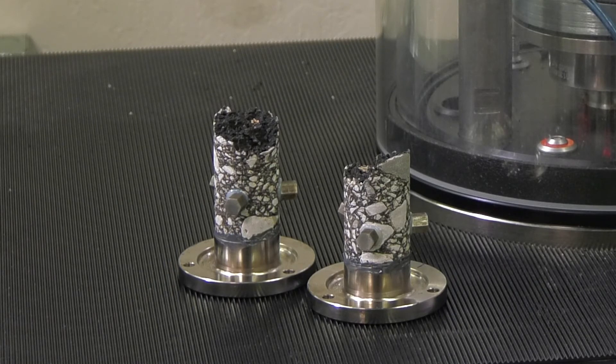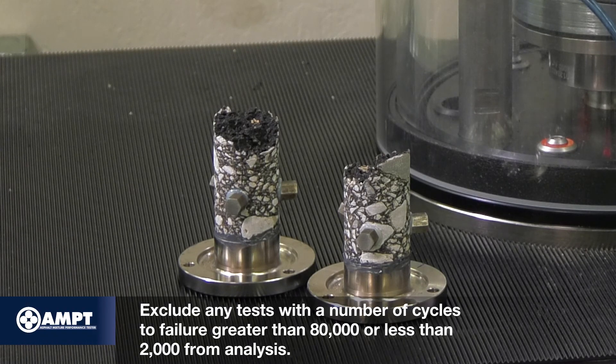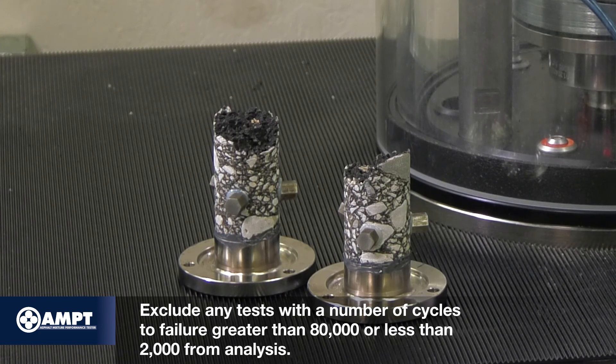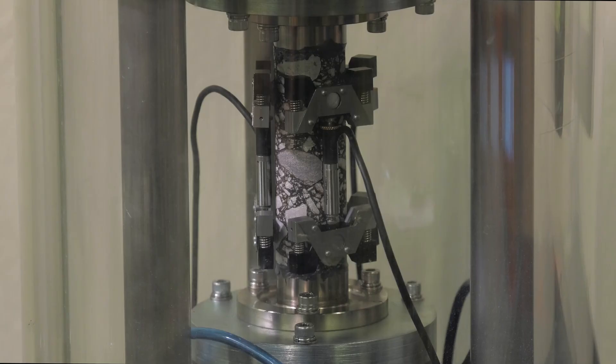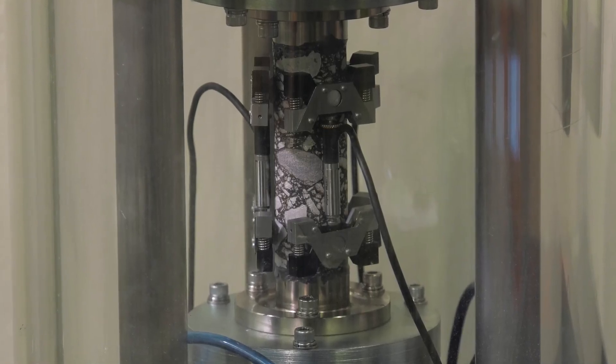Examine the crack pattern of the tested specimen. If the specimen breaks between the gauge points and end platen, the data should be discarded and the test repeated on a new specimen. Exclude any test with a number of cycles to failure greater than 80,000 or less than 2,000 from analysis. Repeat this process on the remaining test specimens.